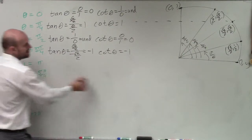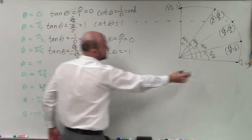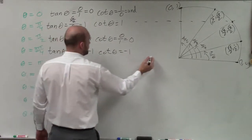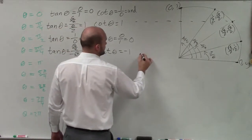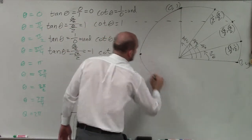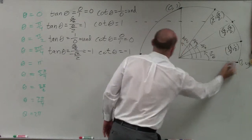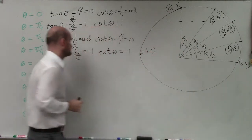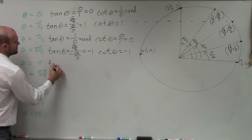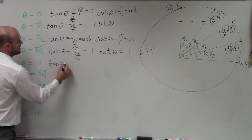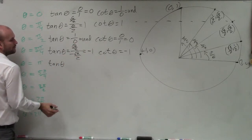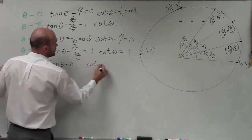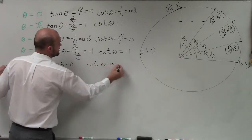For pi, that point is at negative 1, 0. Tangent of theta is going to be 0 over negative 1, which equals 0. Cotangent of theta is undefined, because y over x has 0 in the denominator when x equals negative 1 and y equals 0 — wait, cotangent is x over y, which is negative 1 over 0, so cotangent is undefined.